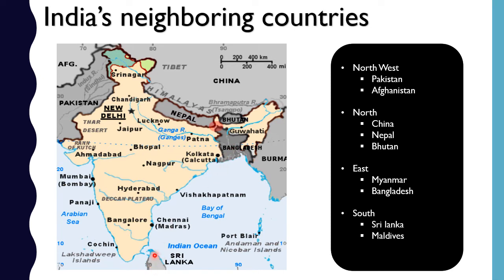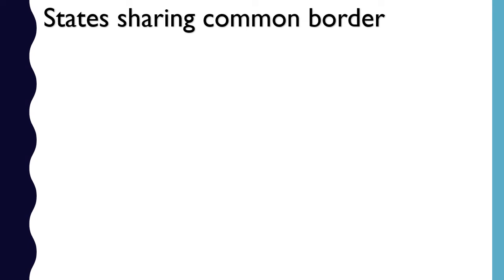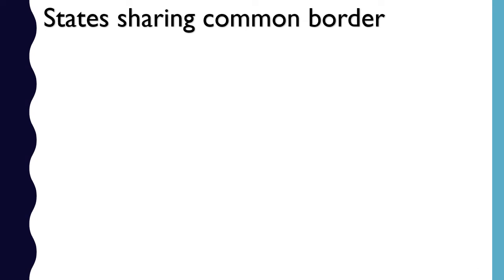Coming to water bodies around India, shown in blue on the map: India is called peninsular India because three sides are covered with water and one side with land. The Arabian Sea is on the west, the Bay of Bengal is on the east, and the Indian Ocean is on the southern side. Between India and Sri Lanka to the south, there is a narrow stretch of water called the Palk Strait, which separates the two land masses of India and Sri Lanka.